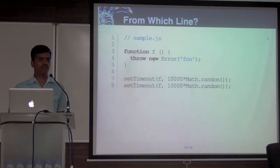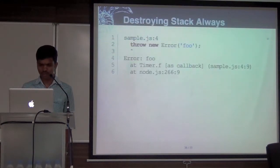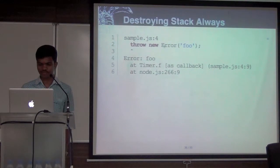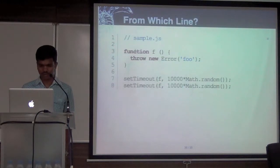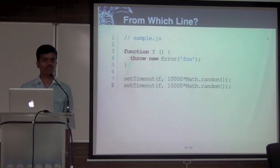Two timeouts will get created. When it runs, this is the error you'll get — because inside this function you're just throwing the error. The error is: 'throw muof error at sample.js line four'. We have an error at sample.js line four — but which caused the error? Is it line seven or line eight? You cannot tell, because the stack trace doesn't have it.